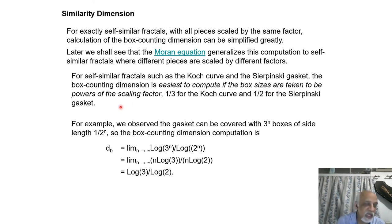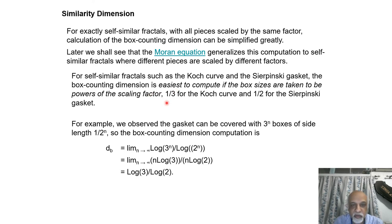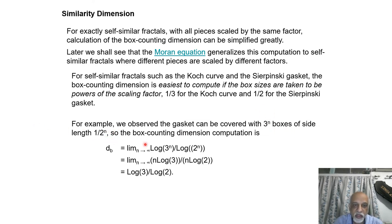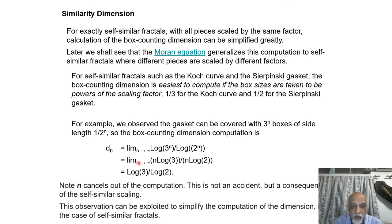For self-similar fractals such as the Koch curve and Sierpinski's gasket, the box counting dimension is very easy to compute provided you take box sizes as powers of the scaling factor. For the Koch curve the scaling factor is 1/3, and for Sierpinski's gasket it's 1/2. The gasket can be covered with 3^n boxes of side length (1/2)^n, giving d_B = log 3 / log 2. This cancellation of the n factor is not an accident — it is a consequence of self-similar scaling.